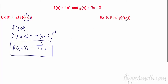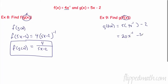Let's try g of f of x. So wherever I see my x, I'm going to plug in 4x to the negative 1. So g of f of x equals 5 times my x minus 2, and what is my x? It's f of x, which is 4x to the negative 1. So that's a multiply — 5 times 4 is 20, x to the negative 1 minus 2. We don't like negative exponents, so the 20 stays because it's a positive exponent but the x goes to the bottom.